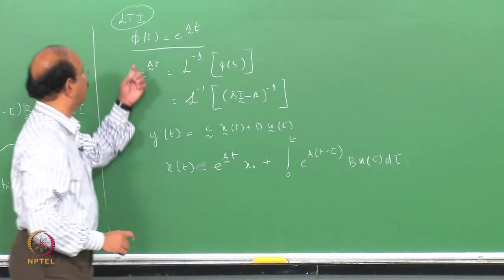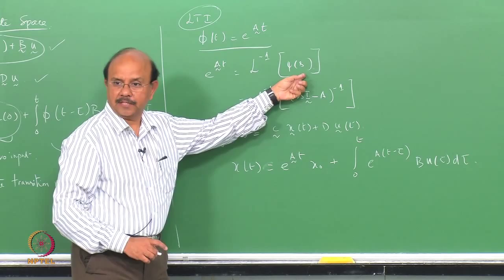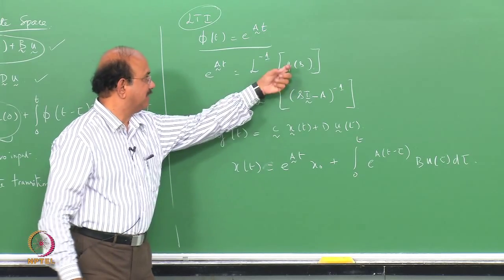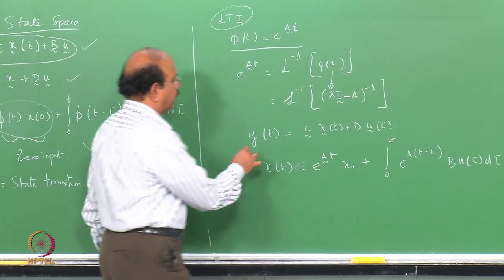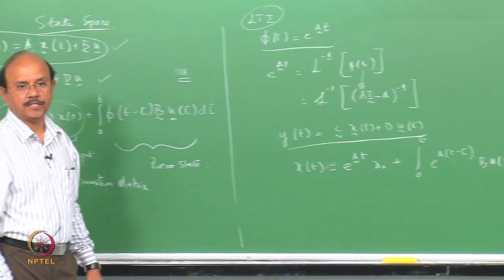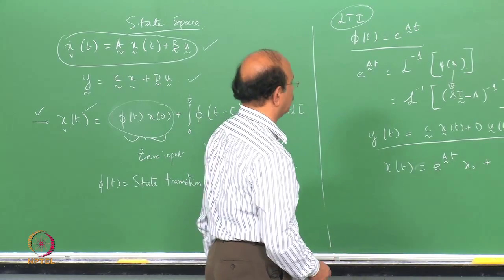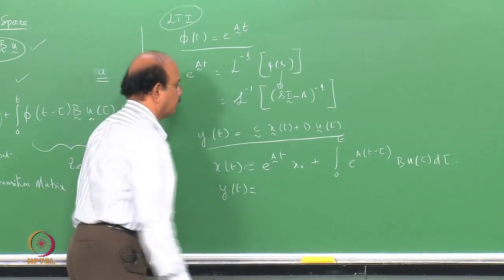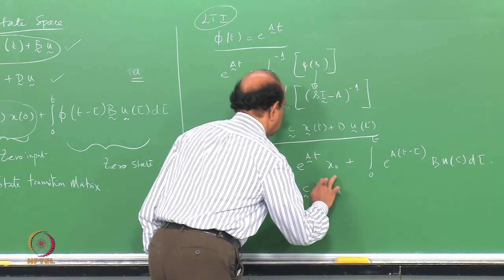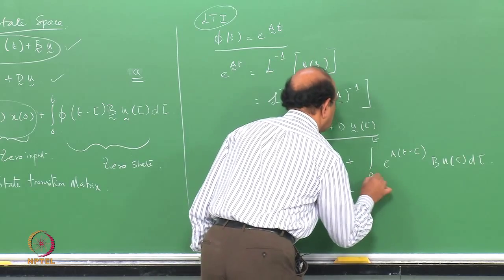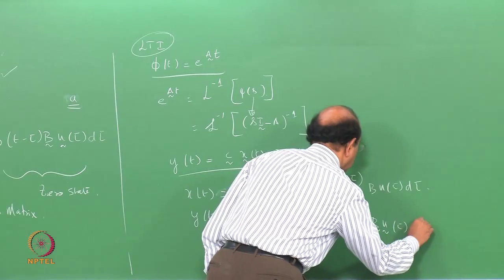Phi(t) is the inverse Laplace transform of psi(s). That is what we did, and that expression boils down to the standard form. In the state space form, x(t) is that expression, from which I can write down y(t). y(t) = C * e^(At) * x_0 + integral from 0 to t of C * e^(A(t-tau)) * B * u(tau) d(tau).